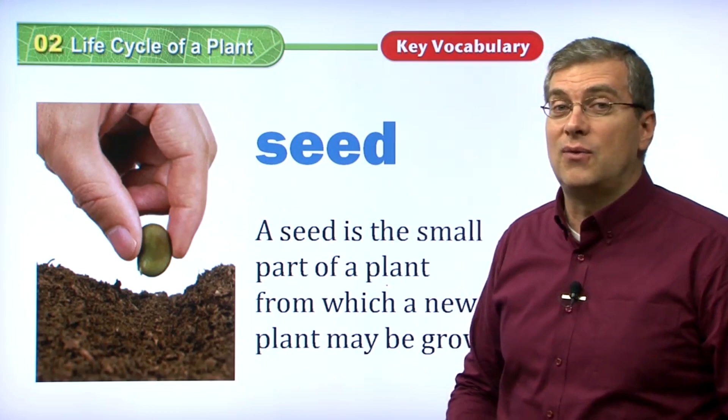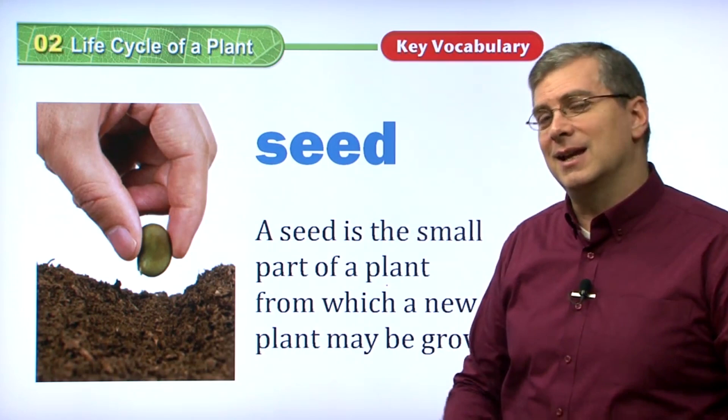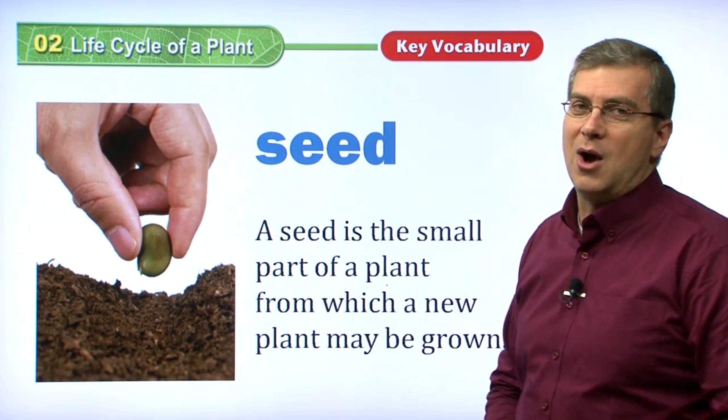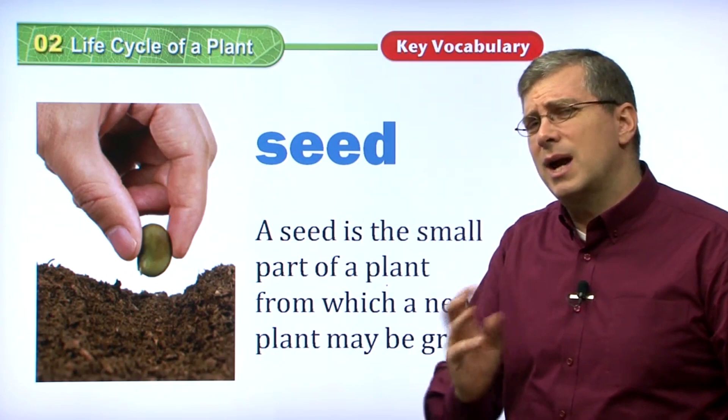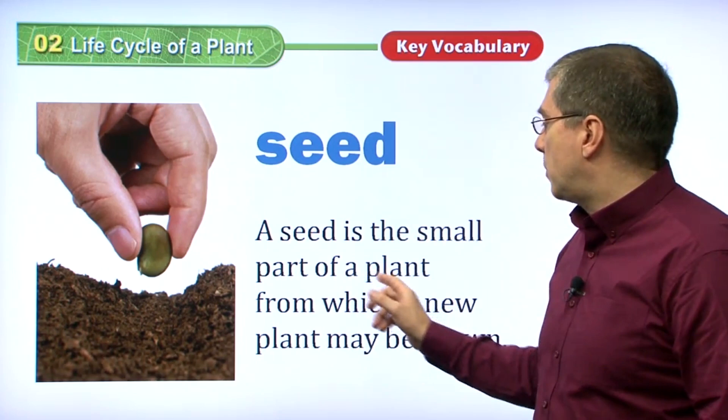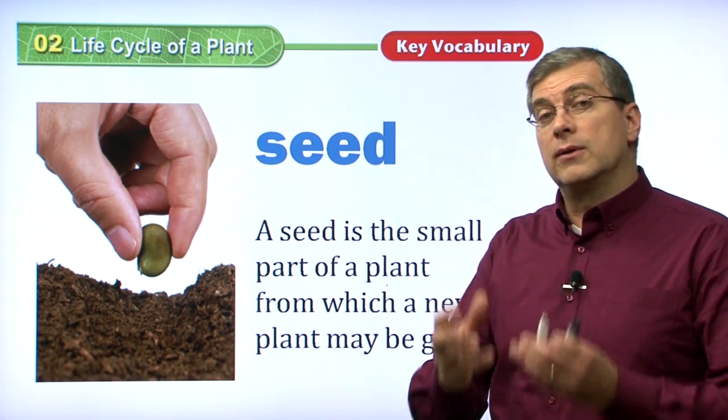We are going to start off with the very beginning of the life cycle for a plant. Remember in Lesson 1, we talked about the seed. The seed is a very important part of the life cycle. The seed is the small part of a plant from which a new plant may be grown. Remember what makes the seed? That's right — fruit. Inside the fruit, we have seeds.